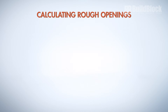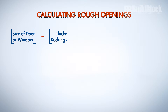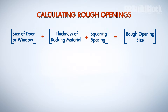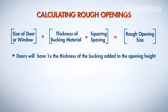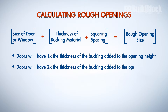To calculate the rough opening size, simply add the size of the door or window to the thickness of your bucking material, as well as the squaring spacing. Additionally, doors will have one times the thickness of the bucking added to the opening height, because the bottom of the door isn't typically bucked. Add two times the thickness of the bucking to the width, because there is bucking on either side.